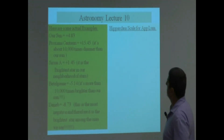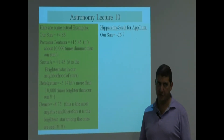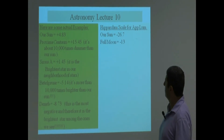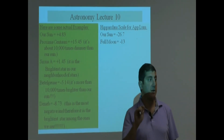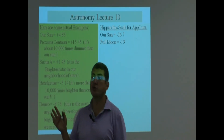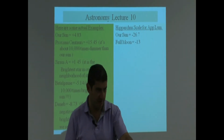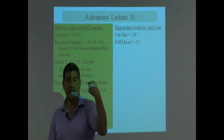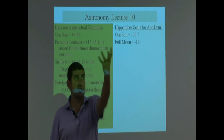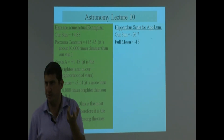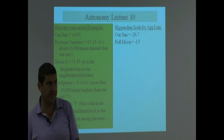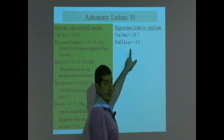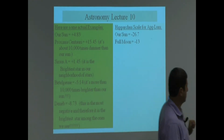On the Hipparchus scale for apparent luminosity, our Sun is negative 26 — completely off the charts. We can also give planets and moons apparent luminosity values because of albedo — reflected sunlight — but not absolute luminosity, since they don't emit their own light. The full moon, reflecting sunlight, is a very bright object at negative 13 on the apparent scale.